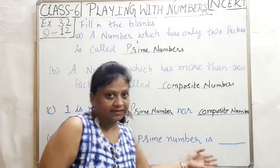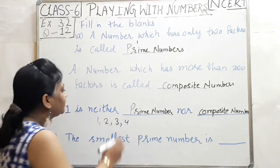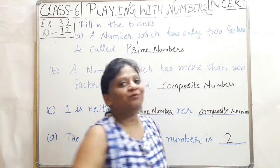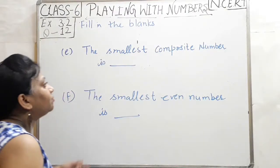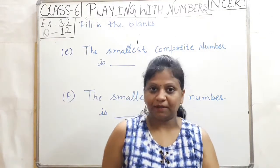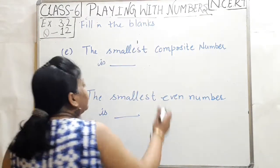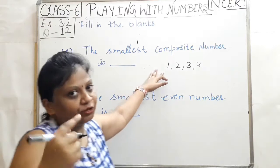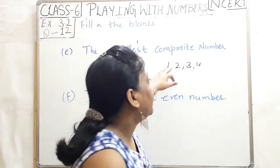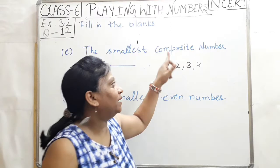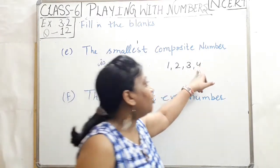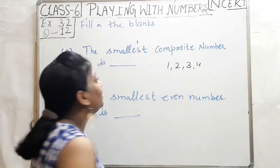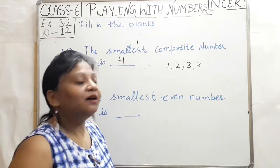Next, the smallest composite number. So, the smallest composite number is four.